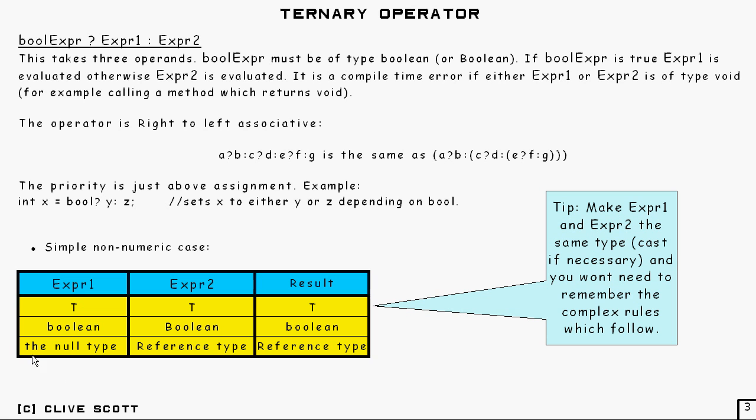Now, this, the null type, by the way, the only way you can get that, as I said, is to write the null literal. It is not, what I do not mean is you've got some sort of reference type in there that happens to contain null, because that is not, the type of that is not null, the null type, it is that reference type. So, what I mean by that null type is literally null in there.